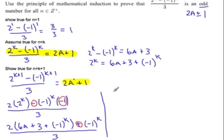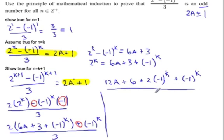So let's distribute that 2. We have 12a plus 6 plus 2 times (-1)^k plus (-1)^k, all over 3. So then we have 12a plus 6 plus how many (-1)^k's do we have? That's 3 of them, all over 3.